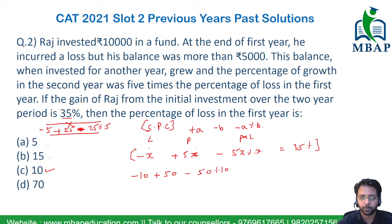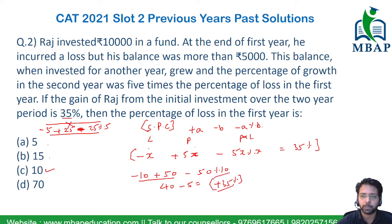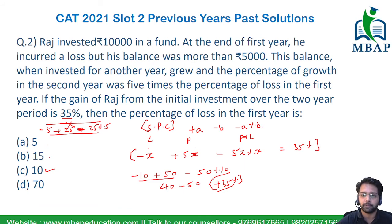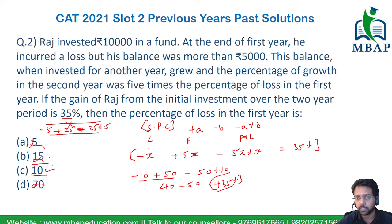Let's verify: minus 10 plus 50 gives 40, and 50% of 10 gives 5, so the final expression gives plus 35% — which matches. This was one of the simplest questions despite the longer wording, as question length does not decide complexity. By smartly checking the options, we can eliminate quickly, and the answer is 10%, which is the loss incurred in the first year, so it's minus 10.